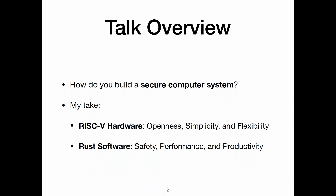I'm not necessarily saying that if you use RISC-V and Rust all your security problems will go away, but I think it does provide a good foundation. The advantages of RISC-V hardware are the openness, simplicity, and flexibility. It provides a good platform for building secure hardware. And Rust software provides the safety, performance, and productivity of a safe systems language that makes your system software much more secure.